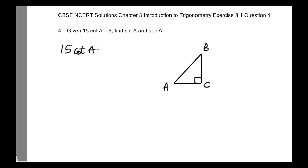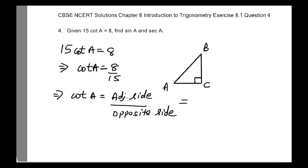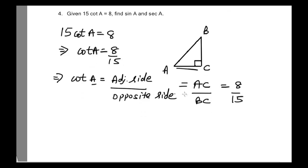It's given that 15 times cotangent of A is equal to 8, so we can write cotangent of A is equal to 8 divided by 15. Now we know that cotangent of any given angle is equal to adjacent side divided by opposite side. The adjacent side to angle A is AC and the opposite side to angle A is BC, and it is equal to 8 divided by 15.